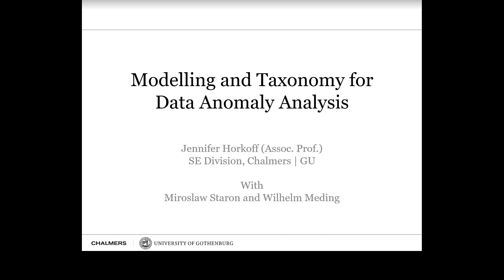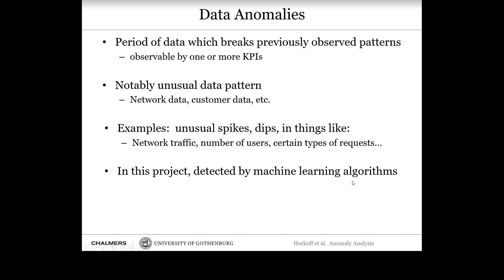So first, what do we mean by data anomalies? Basically, it's something most people are pretty familiar with — it's a period of data which breaks the previously observed patterns. If you have data that follows a pattern you understand, then suddenly it does something strange or unusual, like spiking or dropping. Another way to describe it: a notably unusual data pattern in network data, customer data, or whatever data you collect.